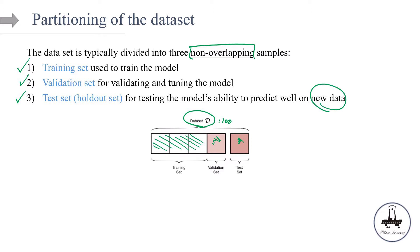Remember, it is important to test the model on something that the model has not already seen, because otherwise it's going to be cheating. If I test the model on the train set, there's no point in doing that because the model has already seen that part of the data. Also note that the training set and validation set are sometimes referred to as in-sample, and the test set is referred to as the out-of-sample set.